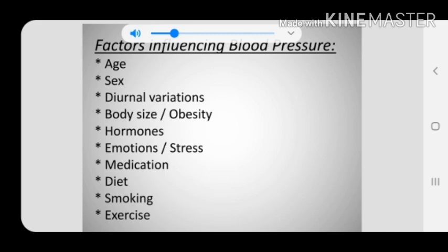Medication: medicines or drugs may increase or decrease blood pressure depending on their pharmacological action. Diet: blood pressure increases after eating food, and some foods cause high blood pressure, such as diets rich in salts and unsaturated fatty acids. Smoking: smoking increases blood pressure due to nicotine. Exercise: regular exercise decreases blood pressure and helps in keeping blood pressure normal.